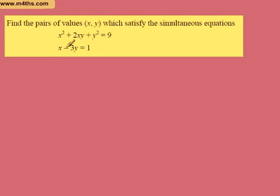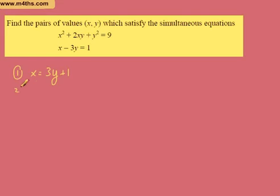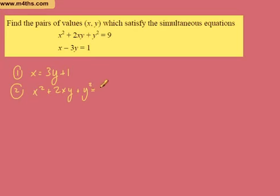I'm going to call this equation 1. Equation 1 is x minus 3y equals 1, so I'm going to write this as x is equal to 3y plus 1, by making x the subject. Equation 2 is x squared plus 2xy plus y squared is equal to 9.